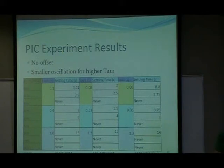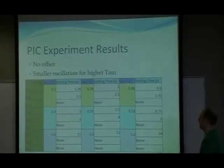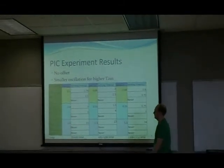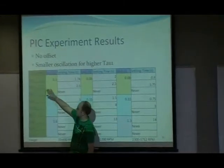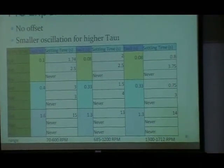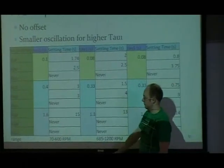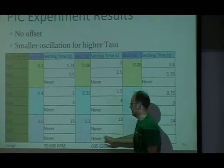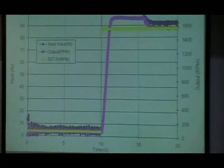These are the PI experiment results. Because it's a proportional integral controller, there is no offset, and there is a smaller oscillation for a higher value of tau1. You can see the settling time for each value of tau1 with each value of KC for each range. With higher values of tau1, the oscillation becomes more prominent the higher the KC value.